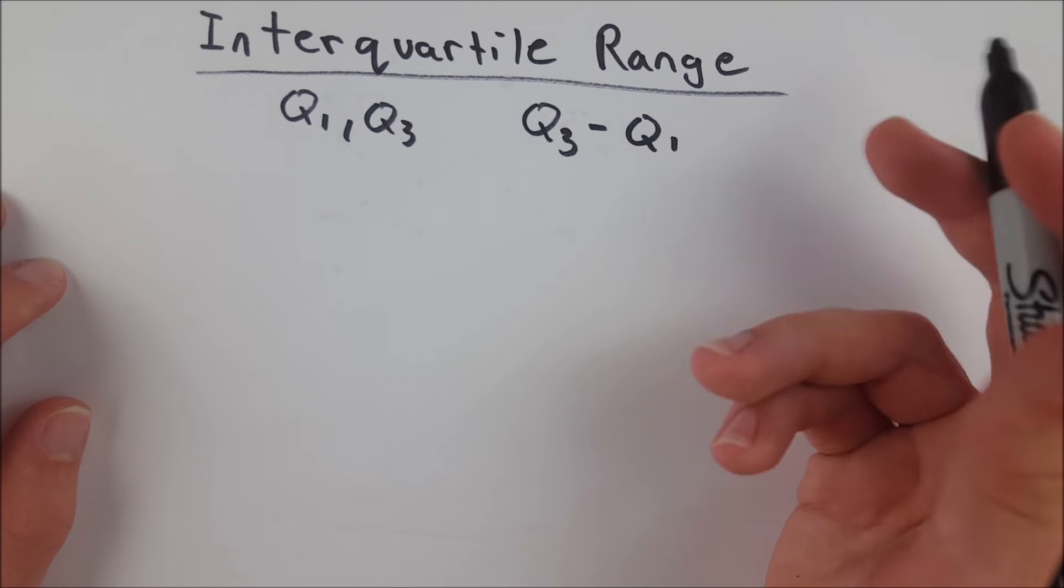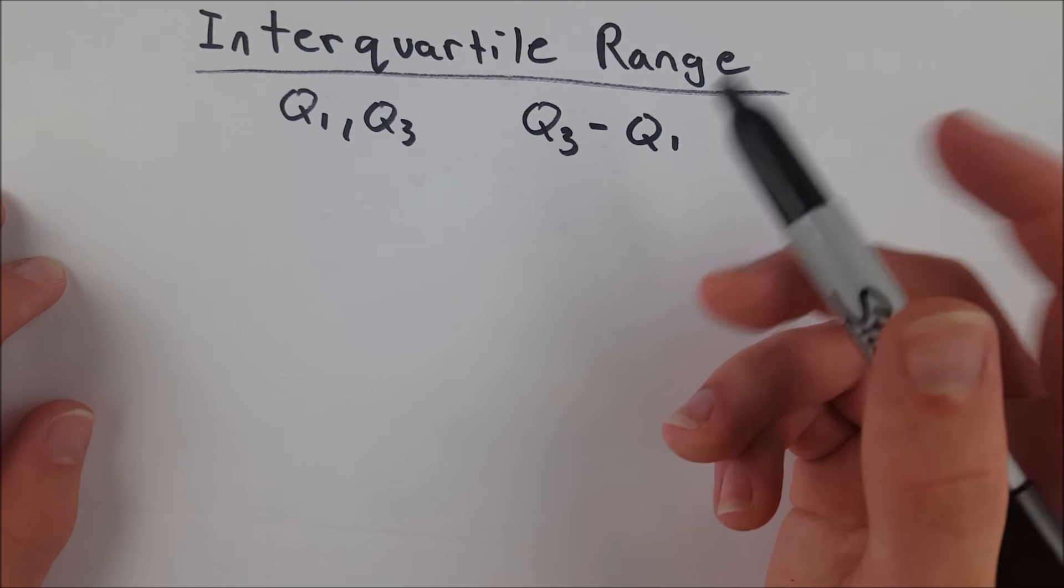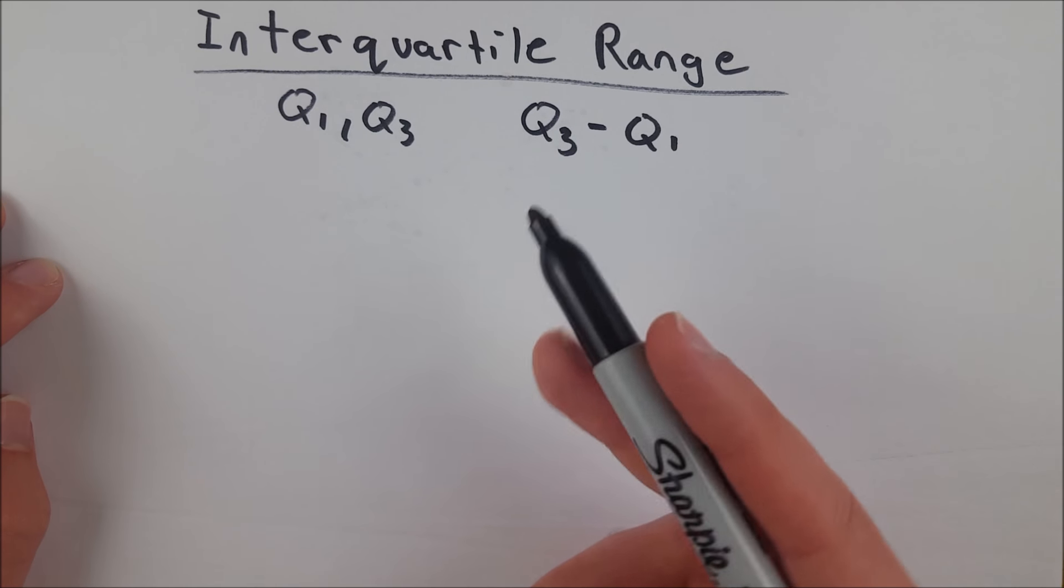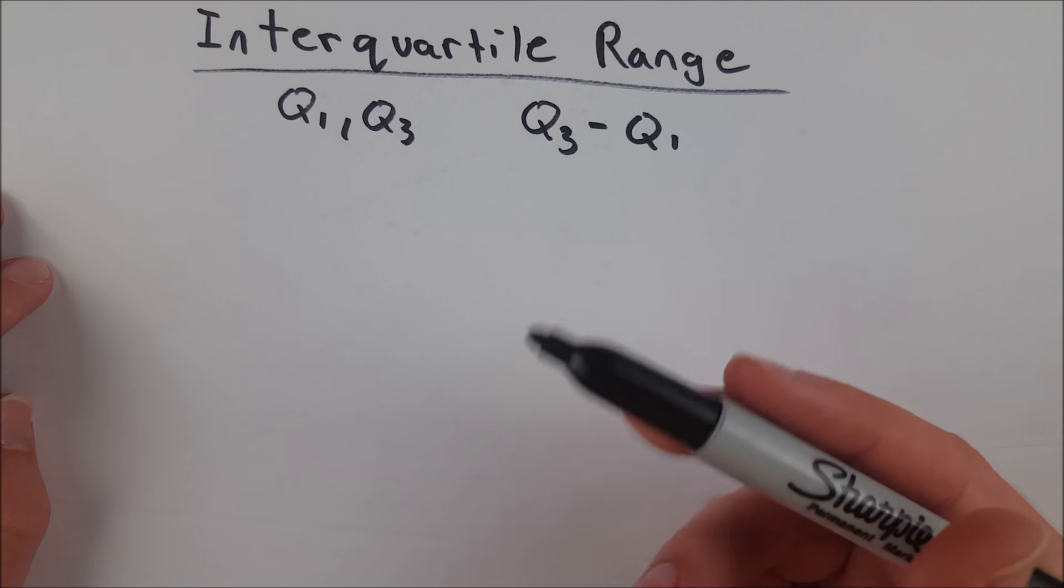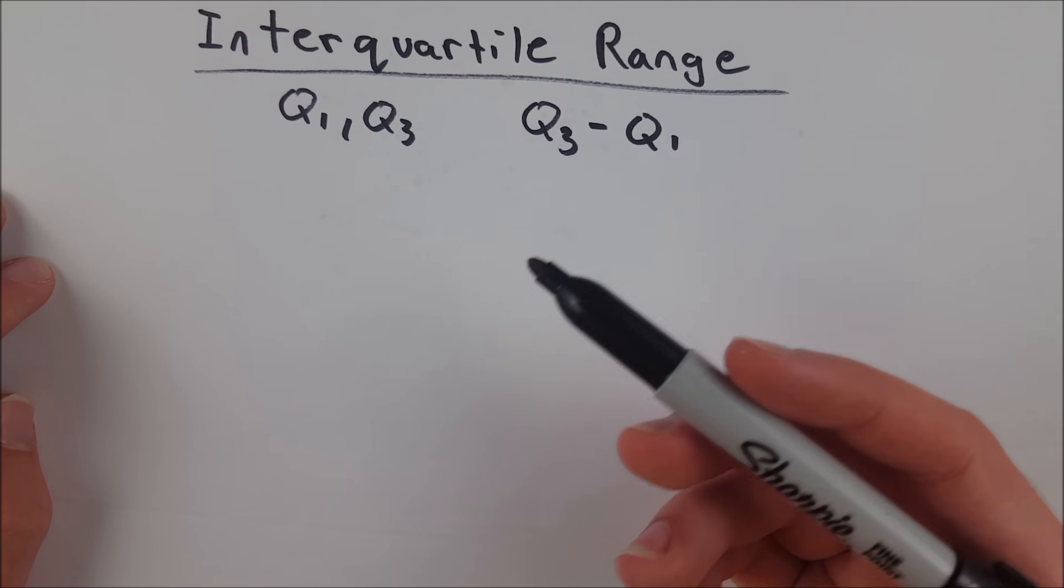Of course, you could do it the other order too. You just have to take the absolute value of that number. So that's what the interquartile range is. It's just the difference between the first and third quartiles, the positive or absolute difference.